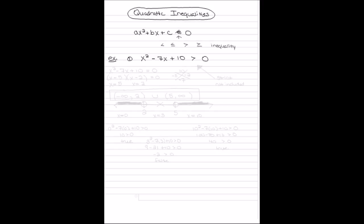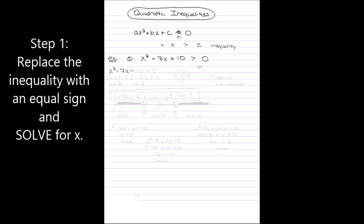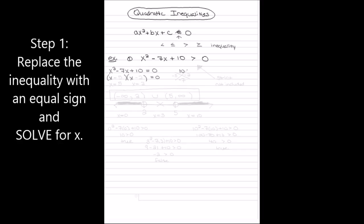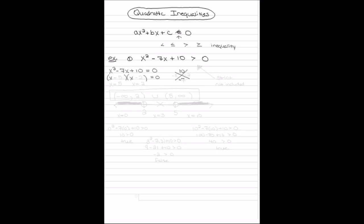The first example on the paper is a quadratic inequality. The first step is to replace the inequality with an equal sign and solve for x. In order to solve for x, I need to factor. I'll do two sets of parentheses with x, and I need to find a number that when I multiply I get 10, but when I add I get negative 7. Those two numbers are negative 5 and negative 2. So I put those in the parentheses and I have x equals 5 and x equals 2.